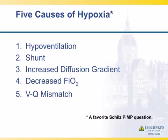Hypoxia is not uncommon as a reason we'll be called to see someone. There can be hypoventilation and shunt, an increased diffusion gradient, decreased FiO2, or VQ mismatch. Sometimes patients are placed on a little too much oxygen and they become hypercarbic.